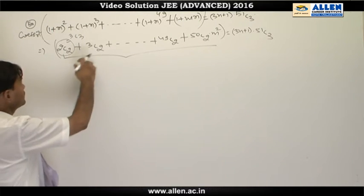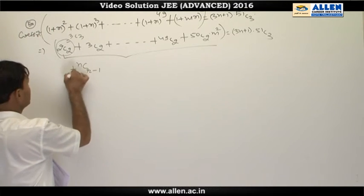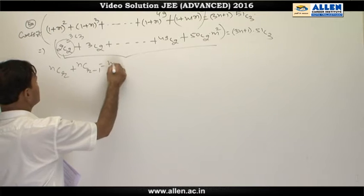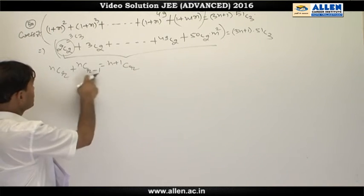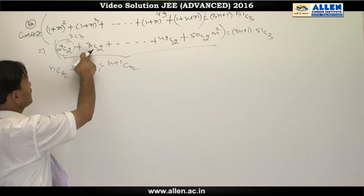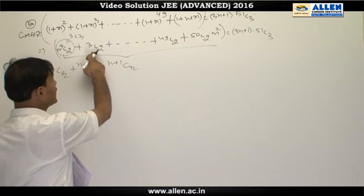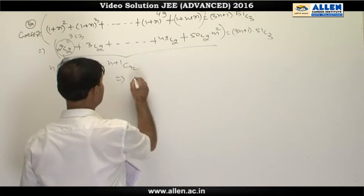Now for this sum we are using the property nCr-1 plus nCr will be equal to (n+1)Cr. So using this result if we add first 2 terms their sum will be 4C3 and continuing in the same manner we reach up to here the sum will be equal to 50C3